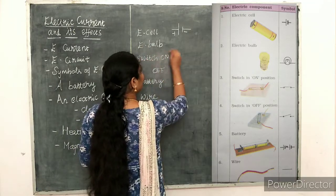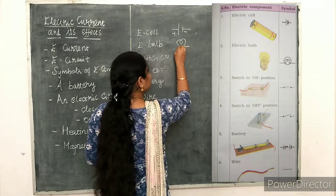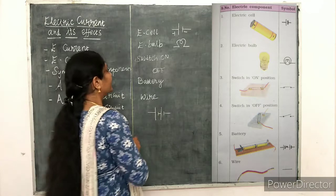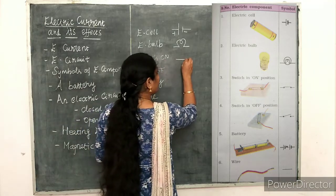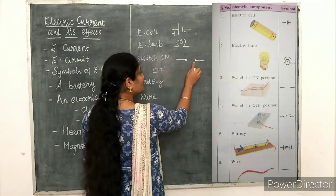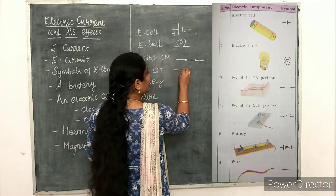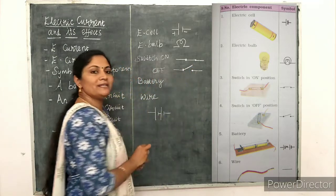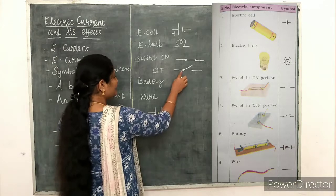The electric bulb symbol represents the bulb in circuits. For a switch in on and off condition: the on condition means the switch is simply connected — this is the closed switch, which is in the on condition. The open switch, or switch in off condition, is represented differently. This is the symbol for that.